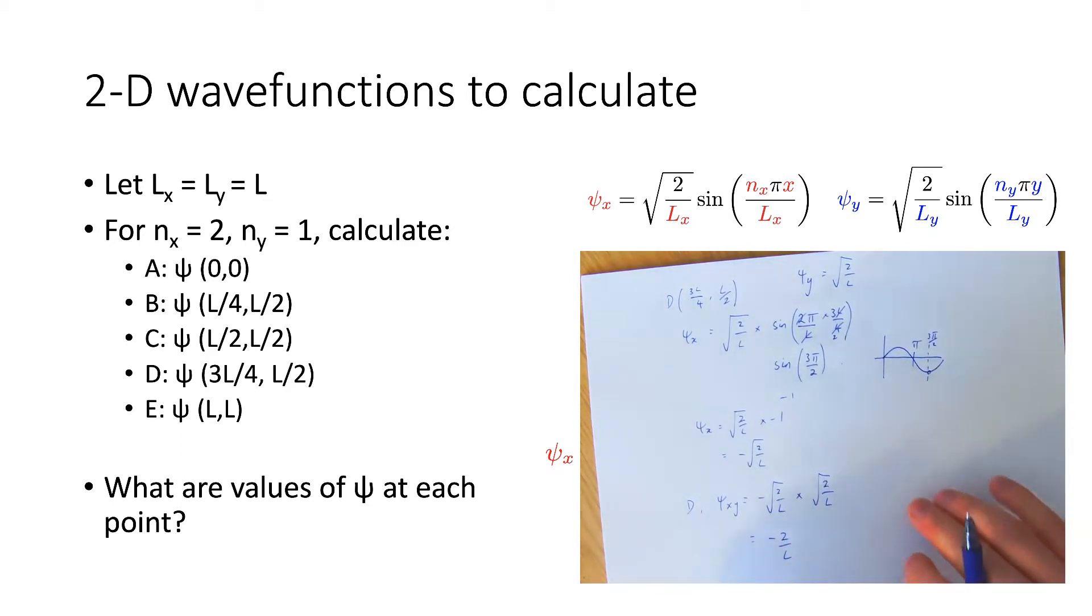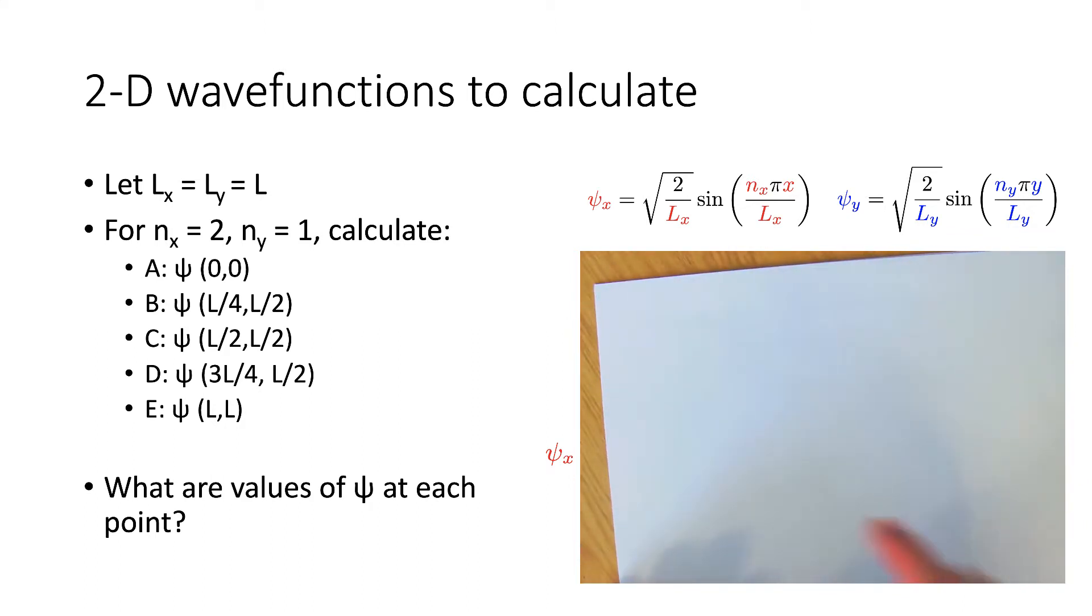When we look at all of our wave functions, when we tabulate these all together, we have our value of ψA is equal to 0, ψB is 2/L, ψC again equal to 0, ψD is negative 2/L, and ψE is equal to 0 again.